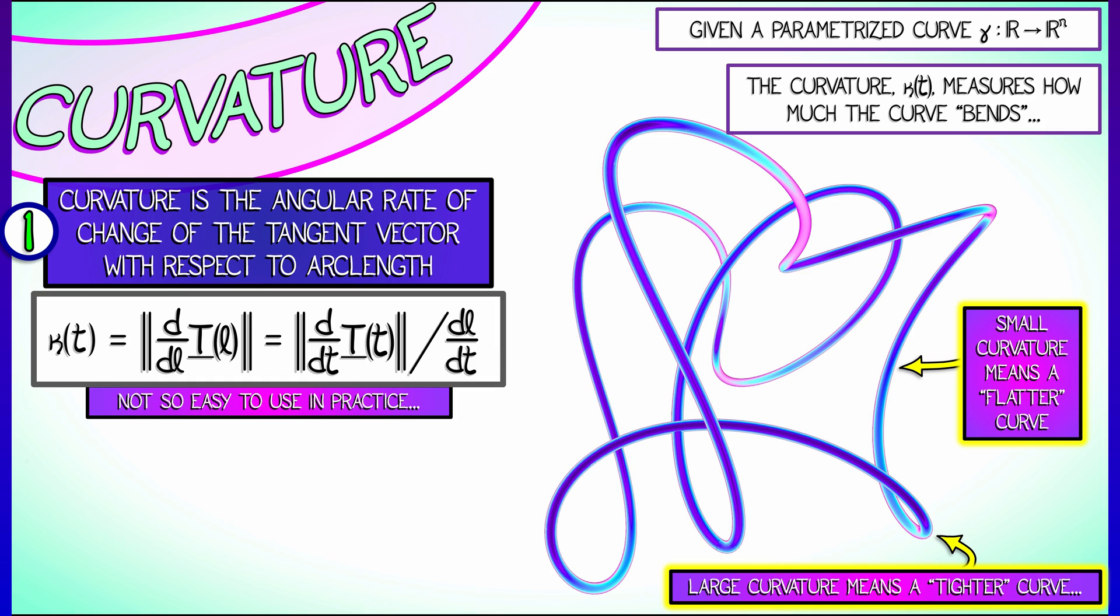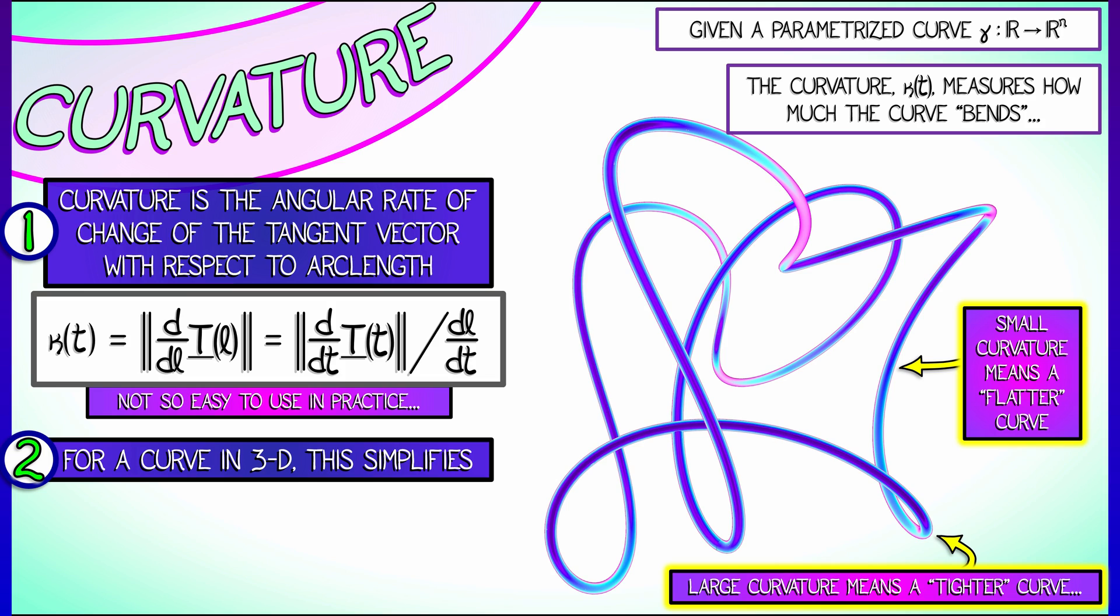This formula is a fine definition, but it's not so easy to use in practice. But if you're in 3D, you can use the 3D cross product to simplify things and show that the curvature is the length of the velocity cross the acceleration vector divided by the speed cubed. That is the normal component of the acceleration divided by the speed squared.